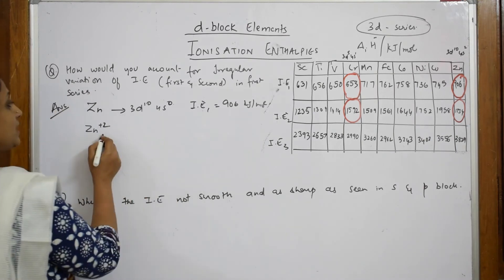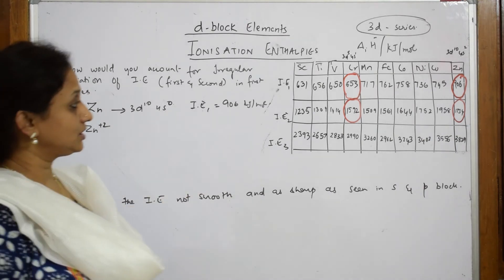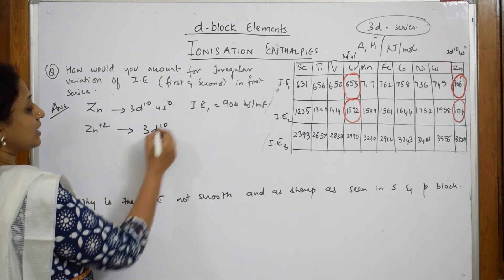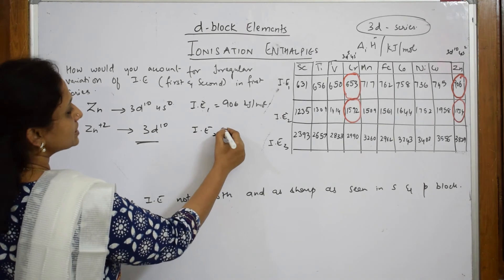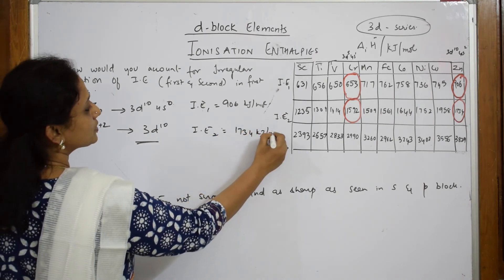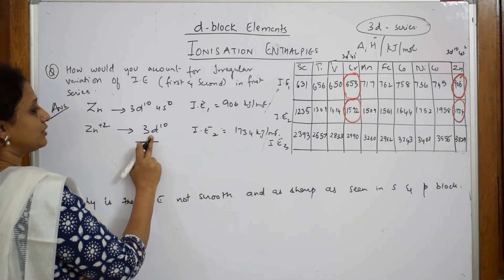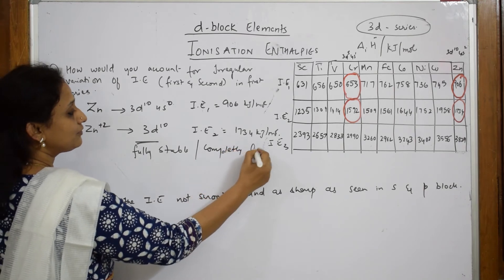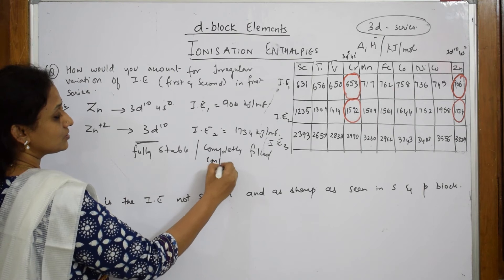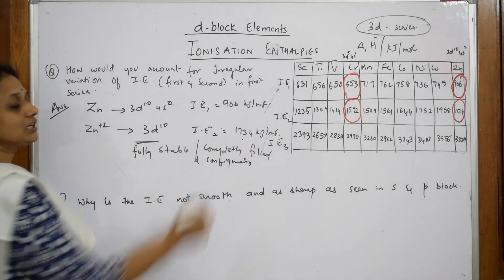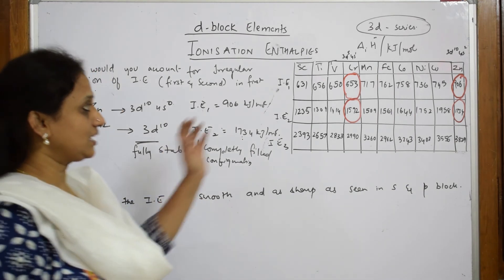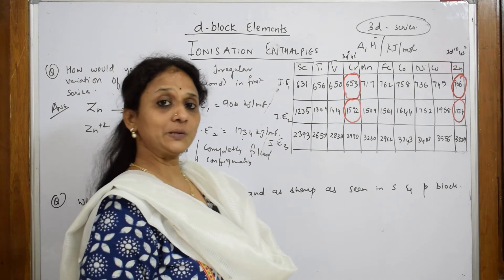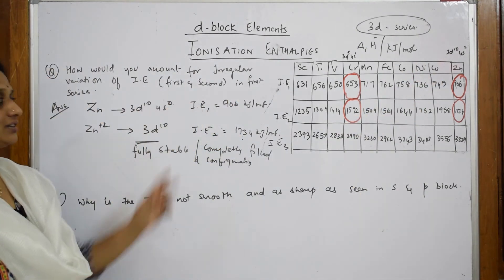Suppose if I have to take out one more electron from here. It is 3,829 kilojoules per mole I require. Why? I have to apply IE3. How much I have to remove? I have to remove it from a completely filled configuration. That is d configuration. So when it is highly stable, automatically the ionization enthalpy will become maximum. I started explaining from left to right. I explained in terms of chromium because it has half filled. I explained in terms of zinc because it is fully filled.